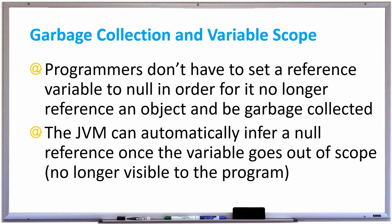You don't even have to do that because the JVM can automatically infer a null reference once the variable goes out of scope, meaning that the variable is no longer visible to the program. An example of this is when you're at the end of a method call and you return from the method — all those variables that were in that method call are no longer being referenced, and the garbage collector will come and sweep them up and free up all that memory.